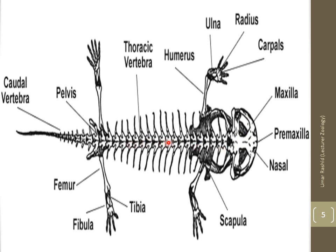Looking at the generalized amphibian skeleton, we can identify the thoracic vertebrae, scapula, radius, ulna, carpals, maxilla, femur, fibula, tibia, and caudal vertebrae. This represents a generalized amphibian skeleton.